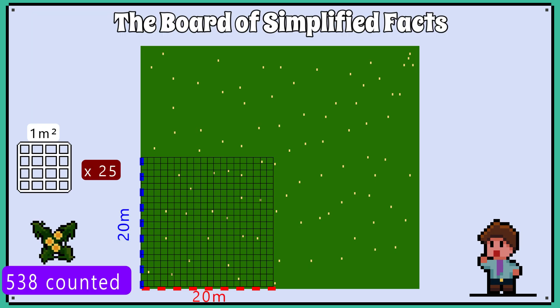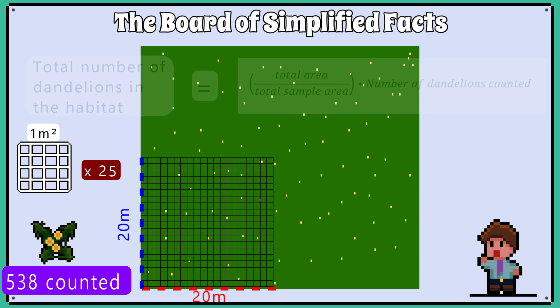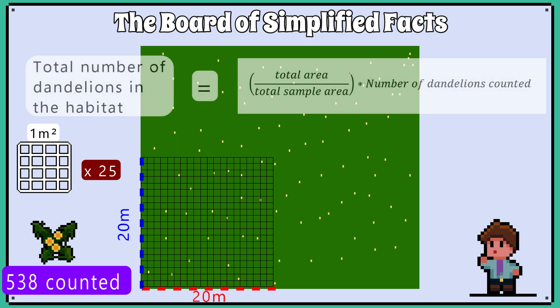We have counted a total of 538 dandelions in our sample area. We now use this equation where the total area is divided by the area we sampled, multiplied by the number of species counted when sampling.